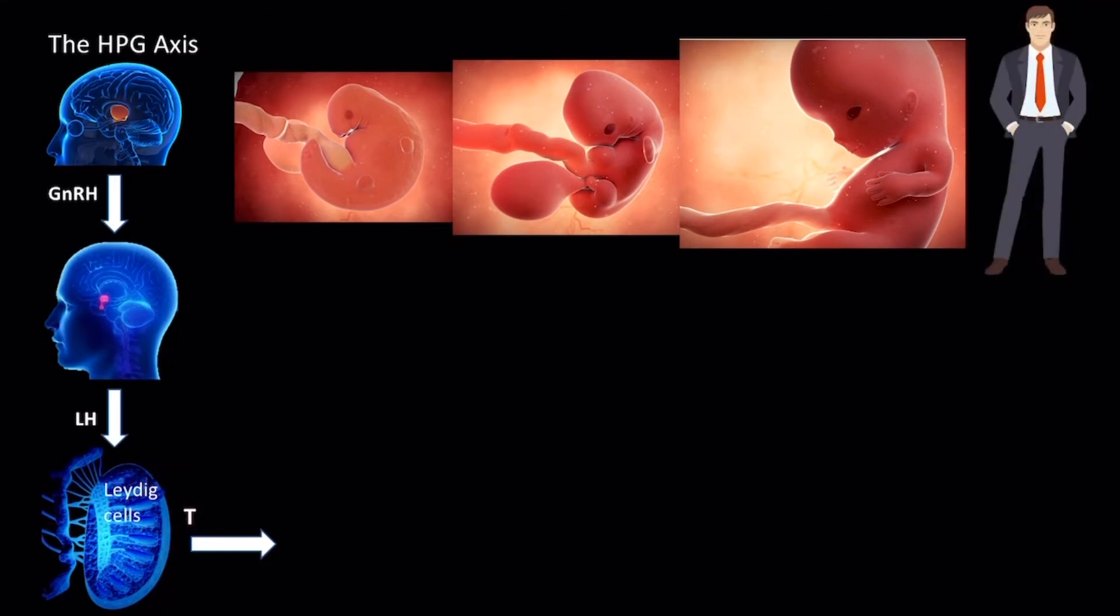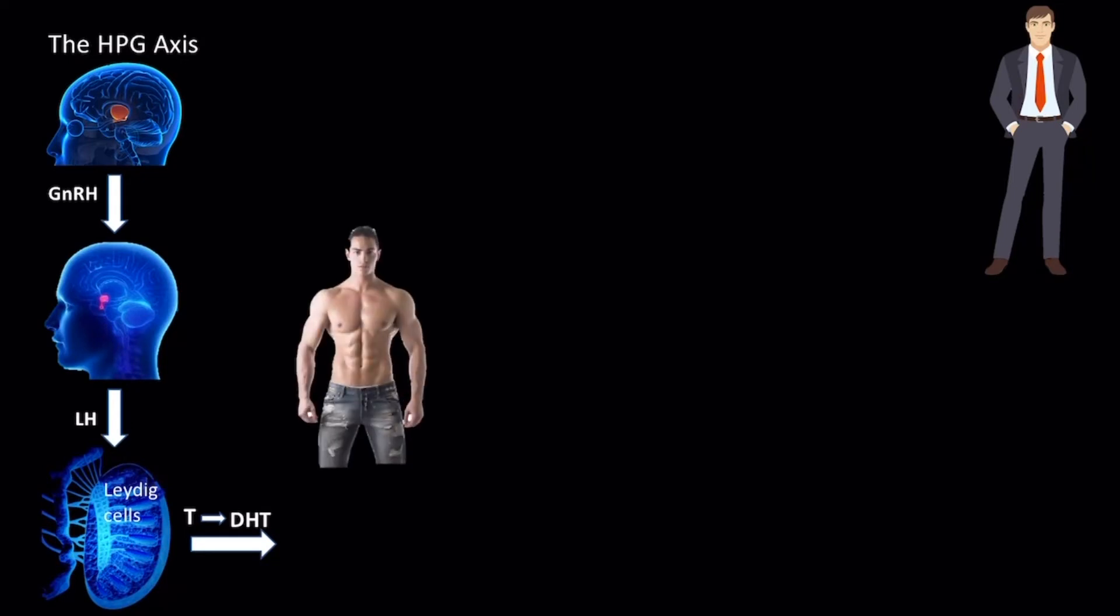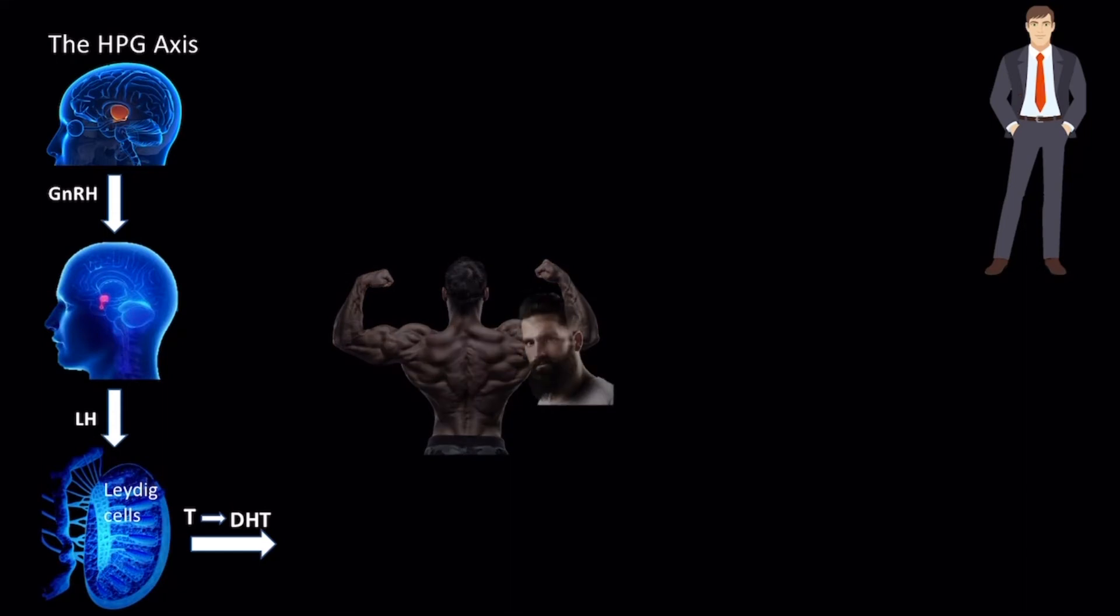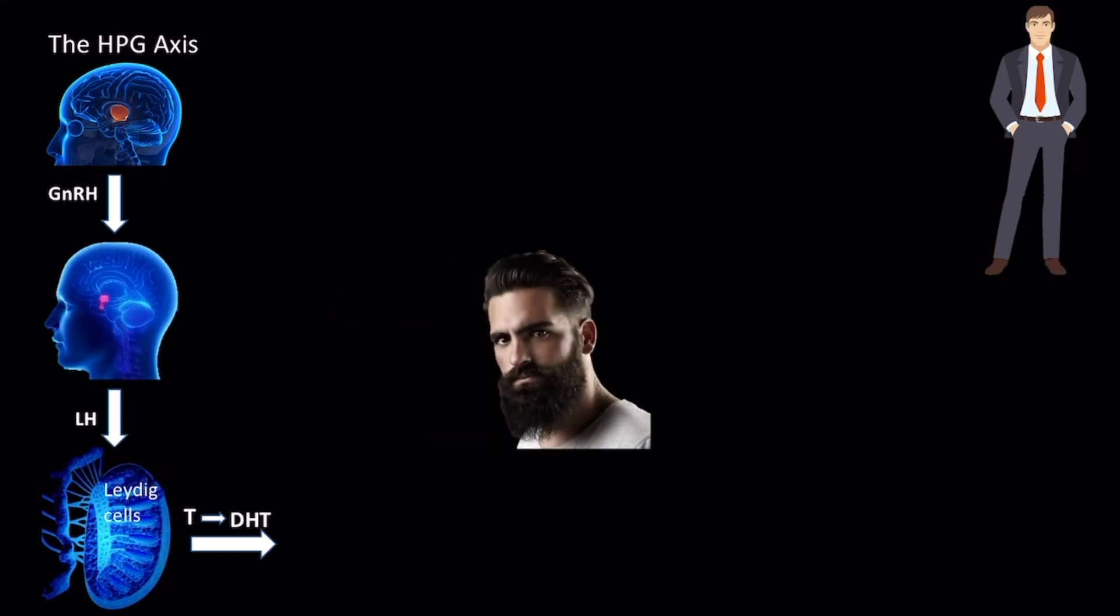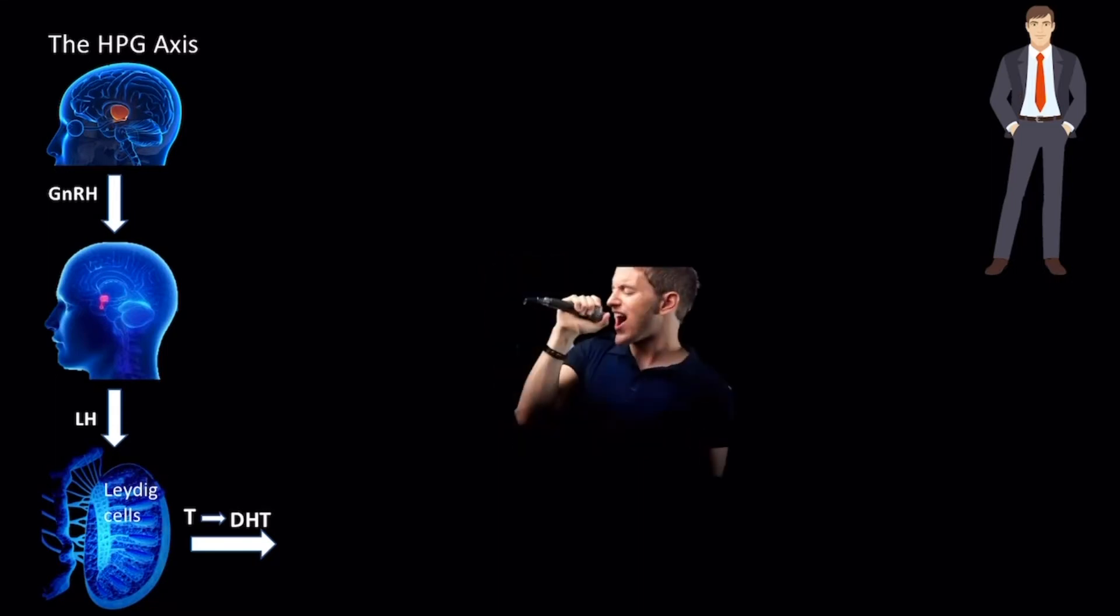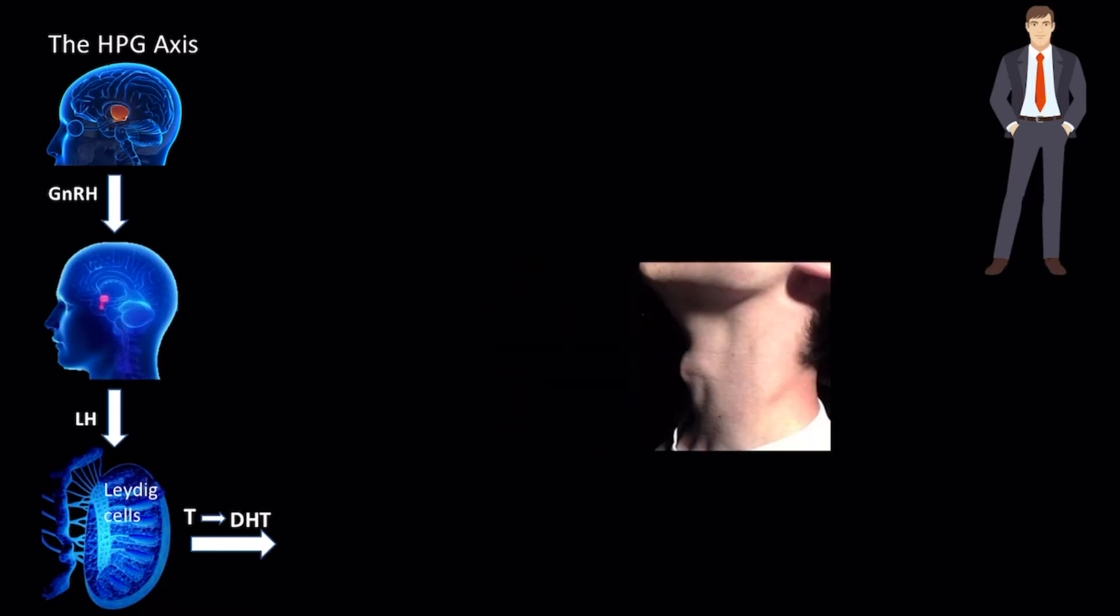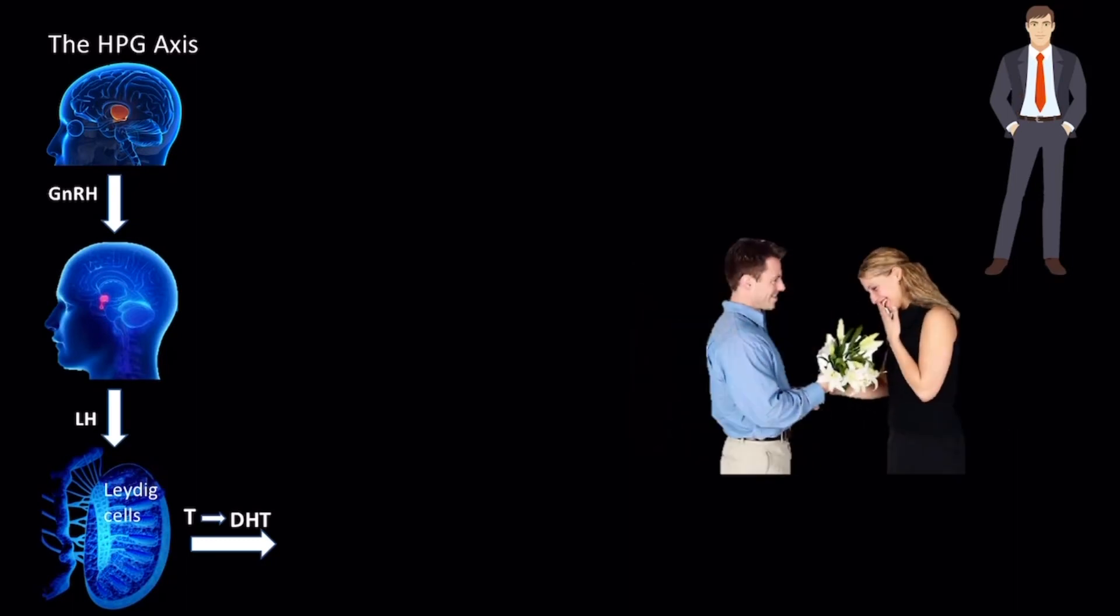Testosterone through its conversion to dihydrotestosterone, DHT, also promotes the development and maintenance of secondary sex characteristics in males. This includes human male characteristics like larger body size, increased muscle growth, pubic hair, auxiliary hair, and facial hair, deepening of the voice, enlargement of the Adam's apple or thyroid cartilage, and the ever popular male reproductive behaviors.